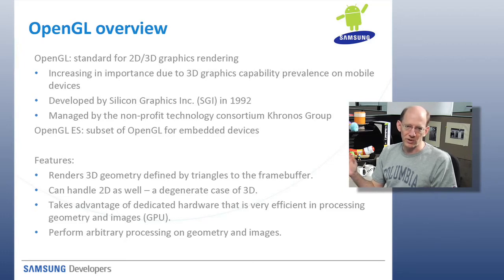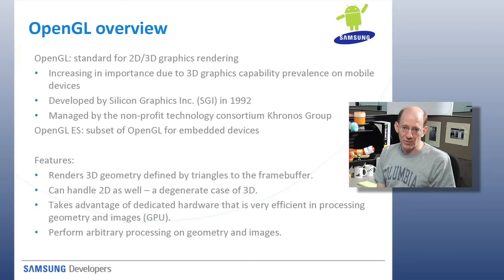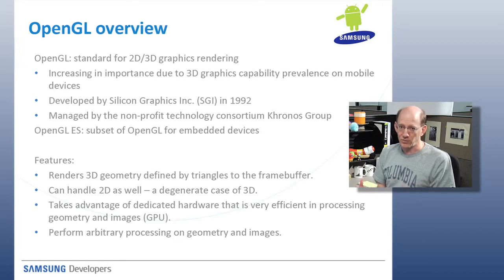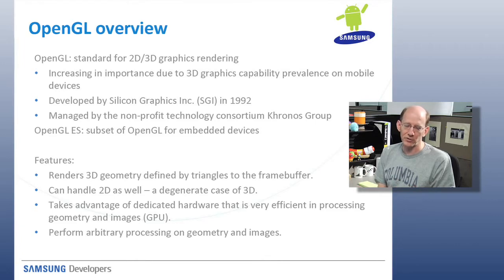OpenGL-ES is a subset of the larger OpenGL standard. The features of OpenGL: it renders 3D geometry defined by triangles to a frame buffer. It can handle 2D graphics as well, because that's just a degenerate case of 3D graphics. It takes advantage of the dedicated hardware that's very efficient at processing the geometry and images. So when you hear talking about a GPU, that's the dedicated graphics processing unit, and it can perform arbitrary processing on geometry and images.